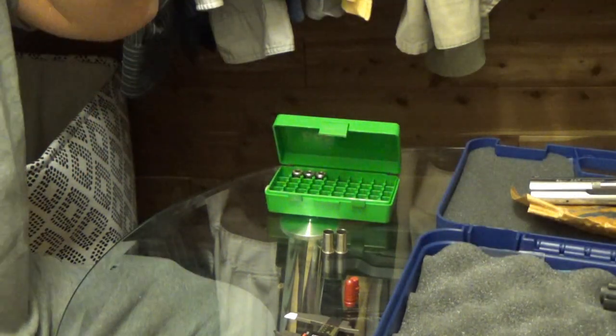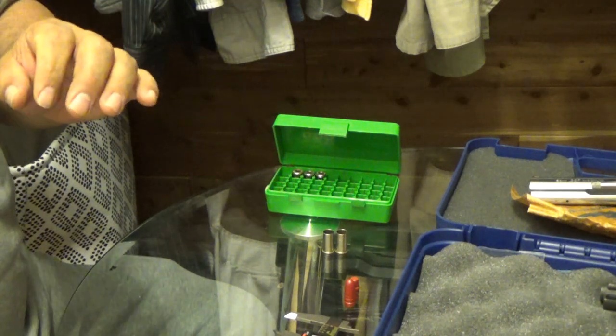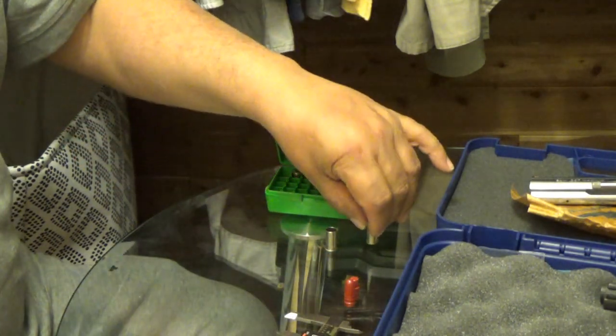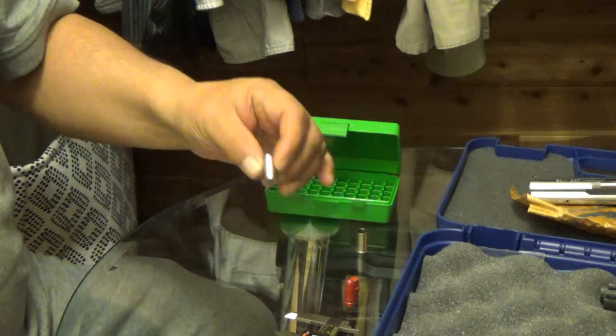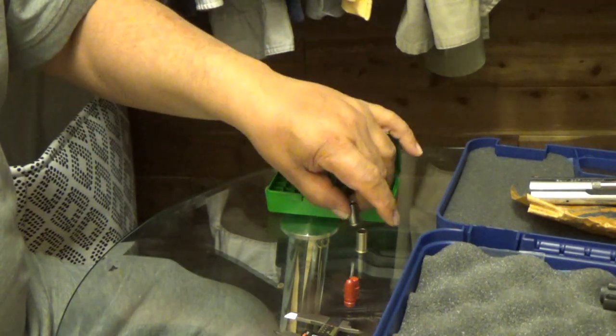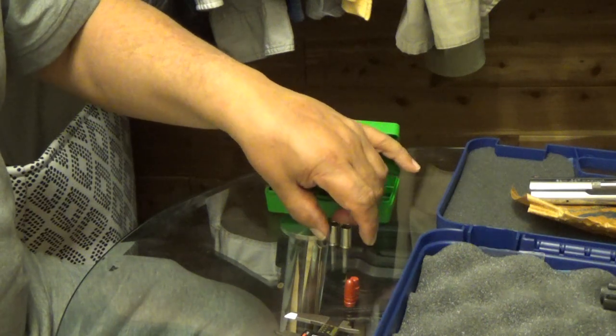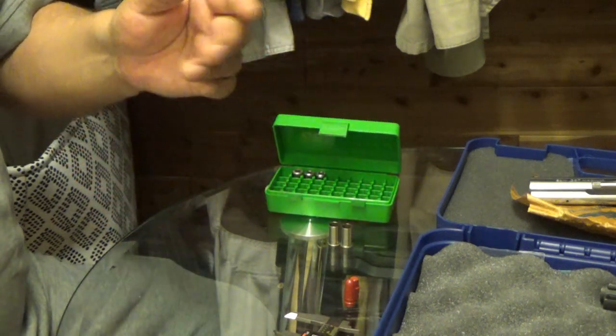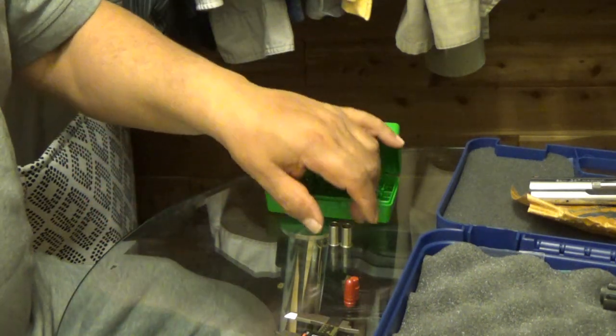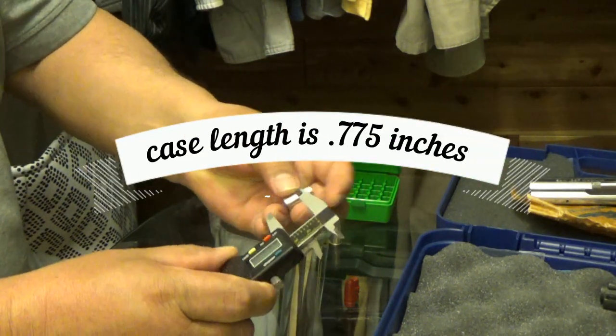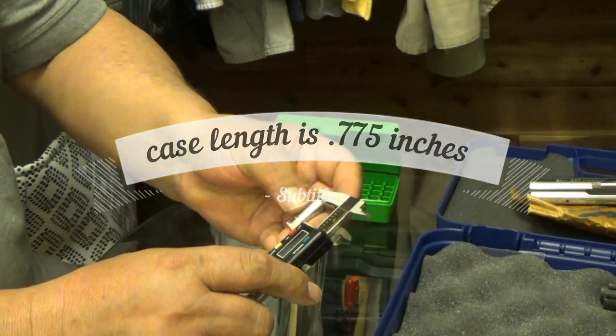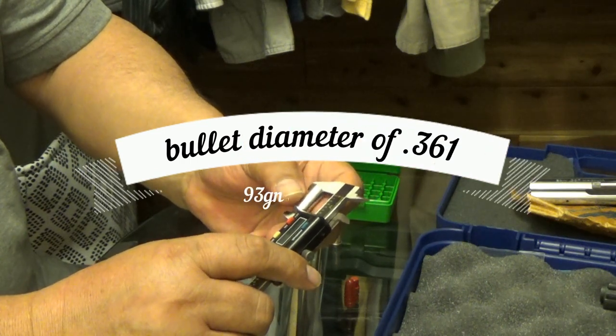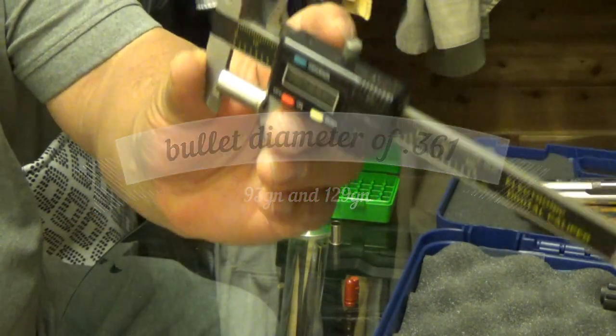The 38 Smith & Wesson was designed in 1877 and was actually designed for the Smith & Wesson top-break revolvers. I think Harrington and Richardson made one as well and a few other revolvers that were top-break. This is before the advent of swing-out cylinders came around. Originally the cartridge was a 0.375 diameter case, and this one measures 0.776.